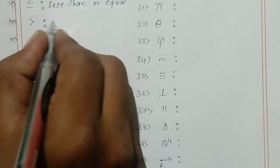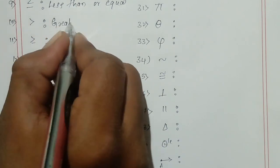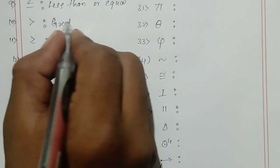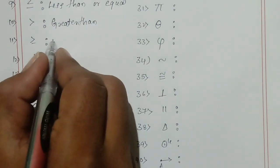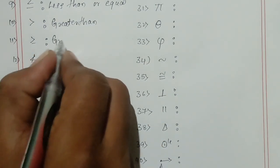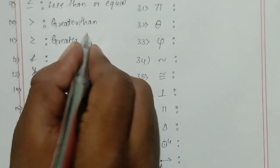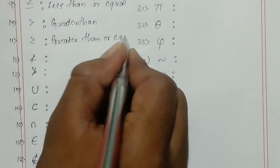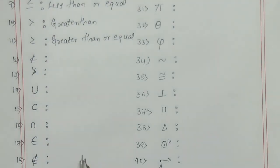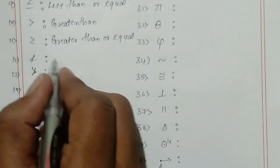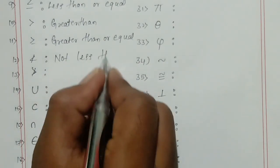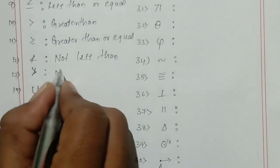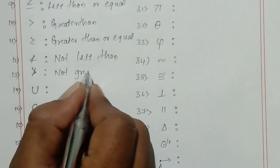This is greater than. Next, this is greater than or equal. This is not less than. This is not greater than.